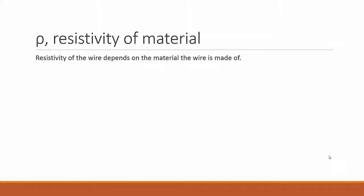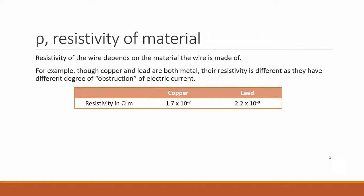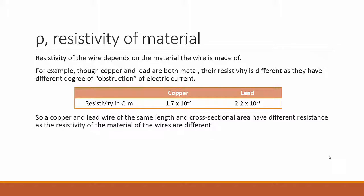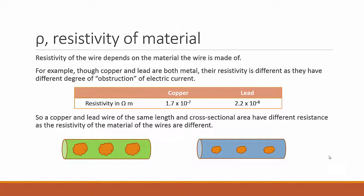Resistivity of the wire depends on the material that the wire is made of. For example, though copper and lead are both metal, their resistivity is different as they have different degrees of obstruction to the electrical current. So a copper and a lead wire can be of same length and same cross sectional area, but have different resistance as the resistivity of the material of the wires are different. The equivalent would be, though two pipes have the same length and the same cross sectional area, the interior of the pipe friction can be different as they are made of different pipe materials. The one that has a rougher interior will present a greater resistance to the water flow.